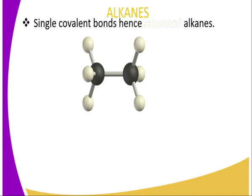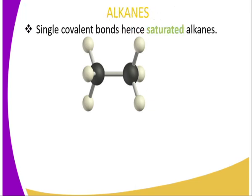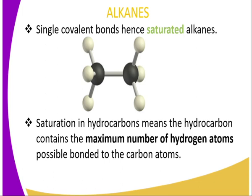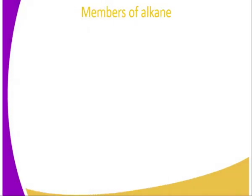Alkanes are saturated hydrocarbons, which have a single bond, hence saturated. So what is the meaning of the term saturation in hydrocarbons? This means they have the maximum number of hydrogen atoms possibly bonded to the carbon atoms — maximum number of hydrogen atoms.